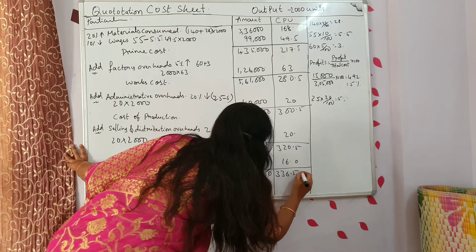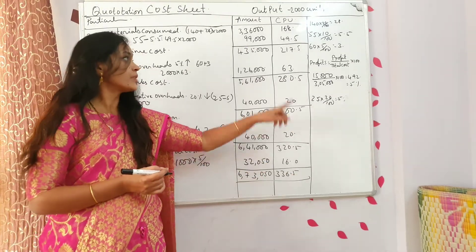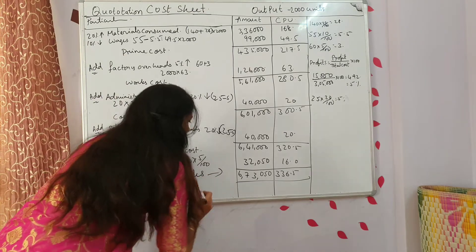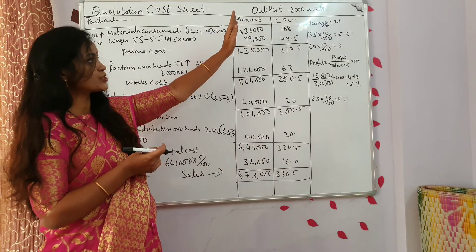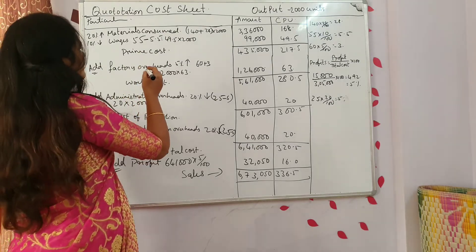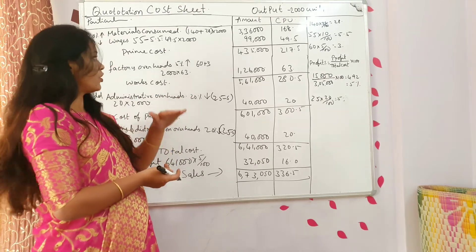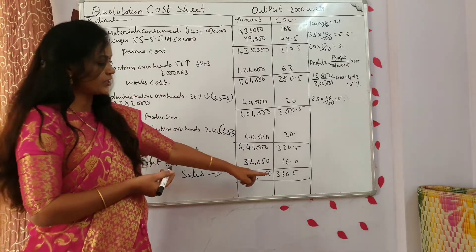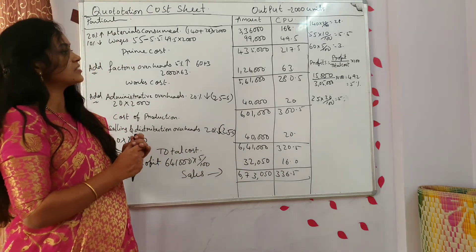Now do the total. The total selling price is 336.5 per unit. The total sales amount will be 6,73,050 rupees. If you increase from 1000 units to 2000 units with a few changes — sometimes prices may increase, sometimes prices may decrease. Here some have increased and some have decreased. With that, if you calculate for 2000 units, you get cost per unit 336.5 and the total amount is 6,73,050.